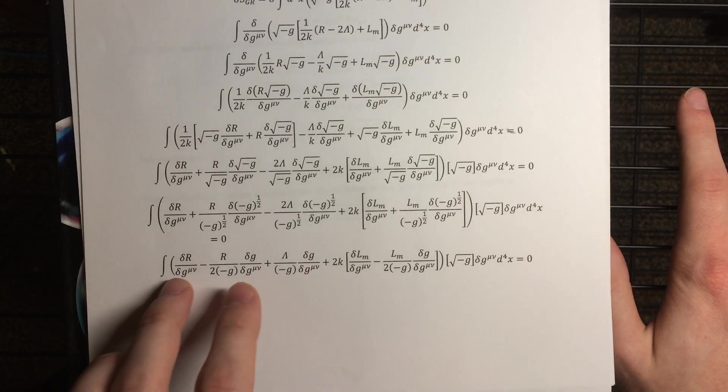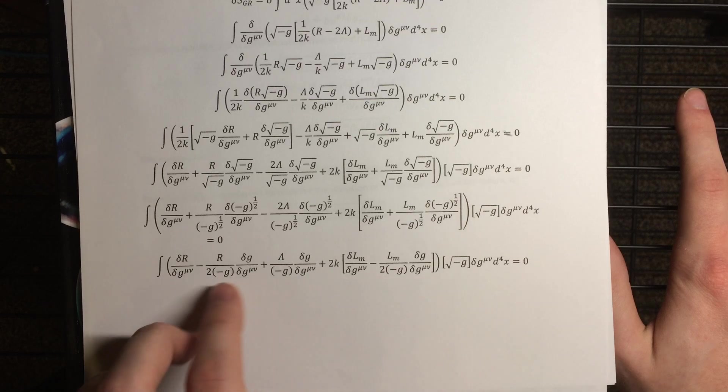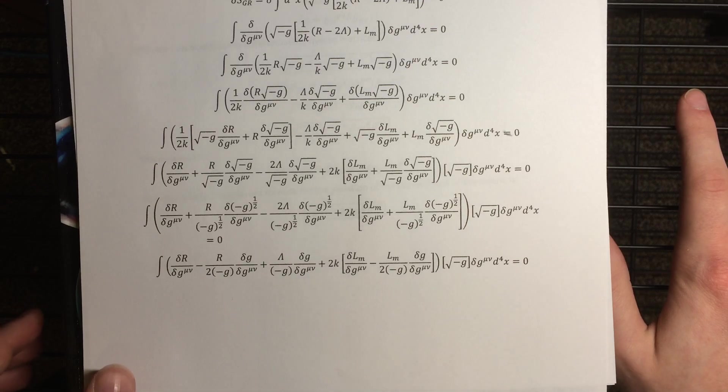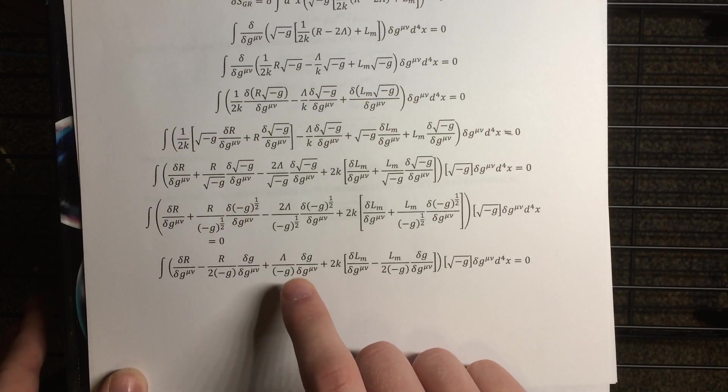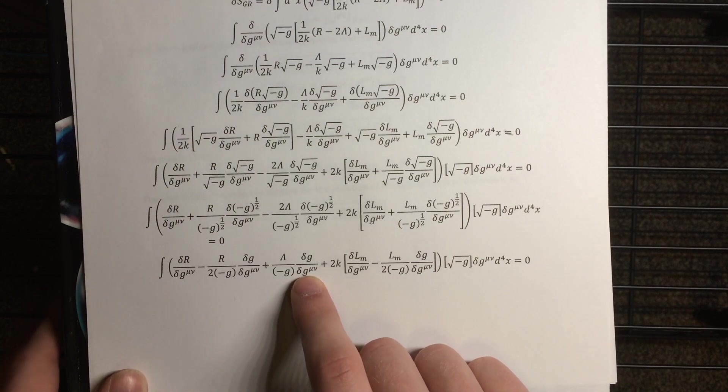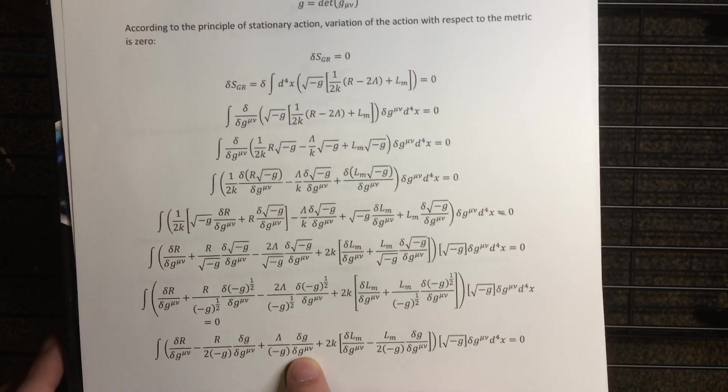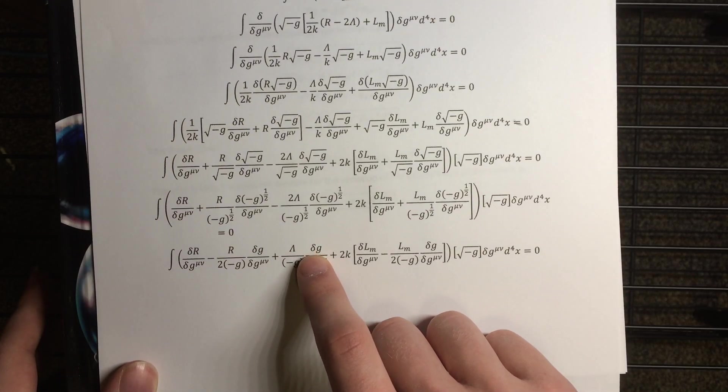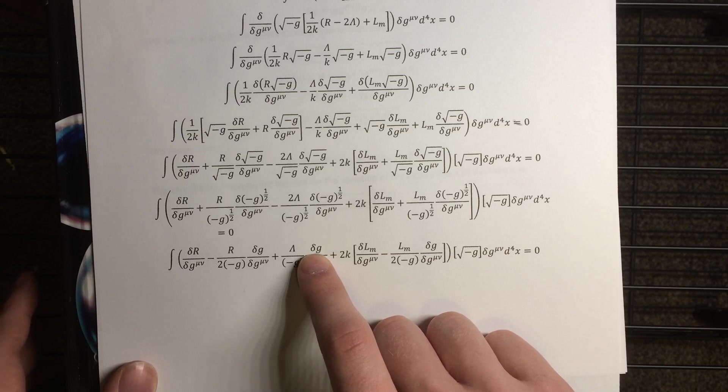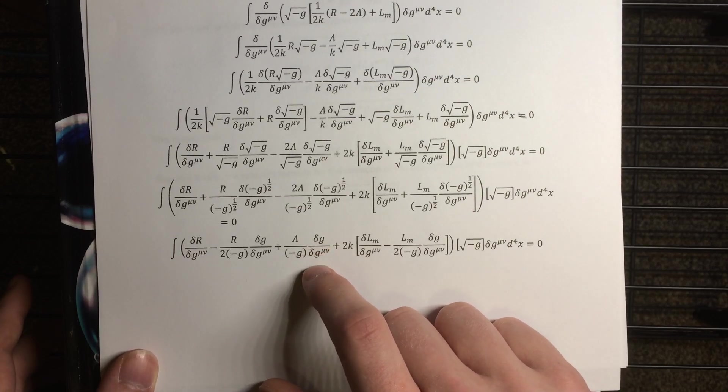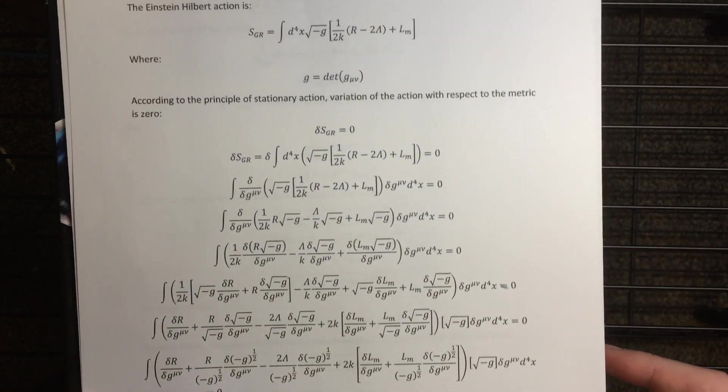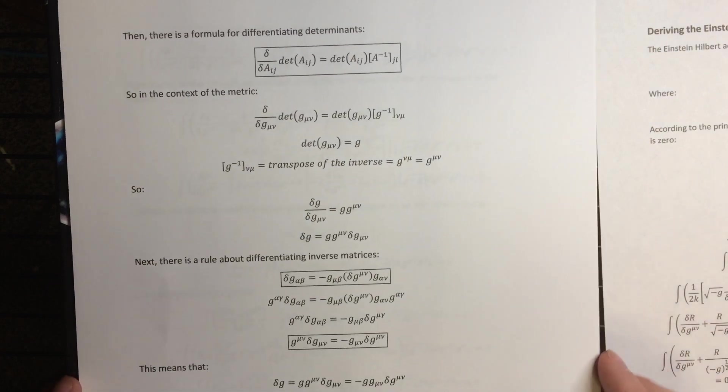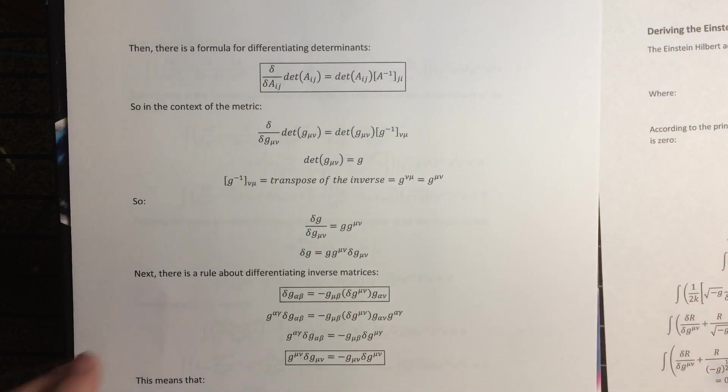Now, in order to calculate these variations, that one, and then these variations of the determinant of the metric, we need some more non-trivial identities. To calculate this one, we need two special identities to figure all that out. The idea is to write the variation of the numerator in terms of something that involves a factor of the denominator, so they cancel. We'll see how that ends up working.